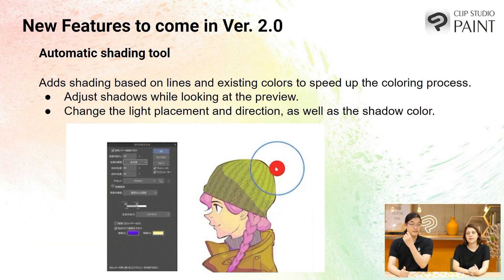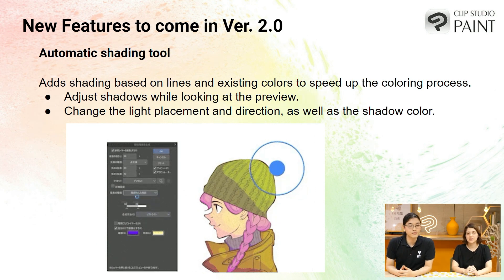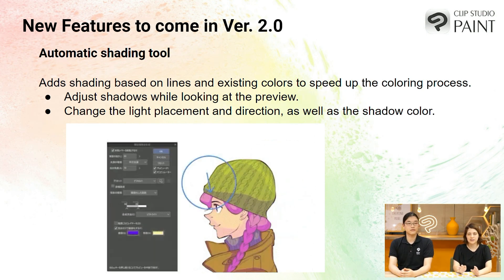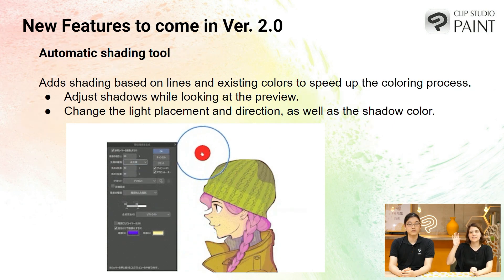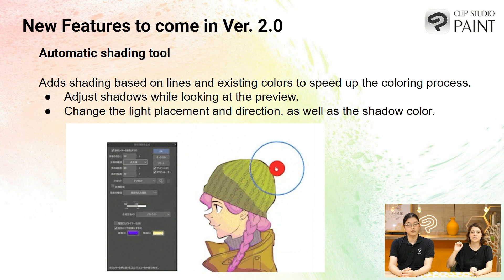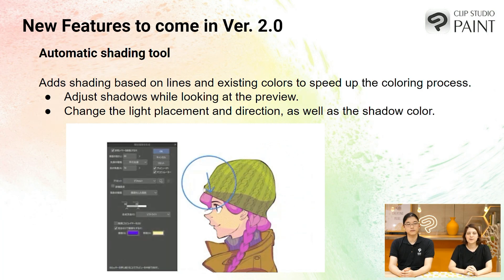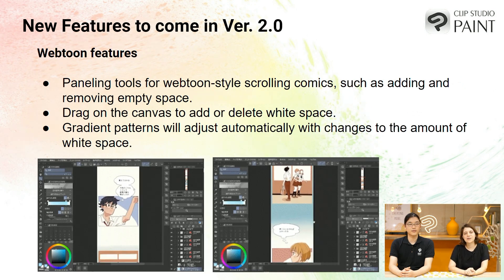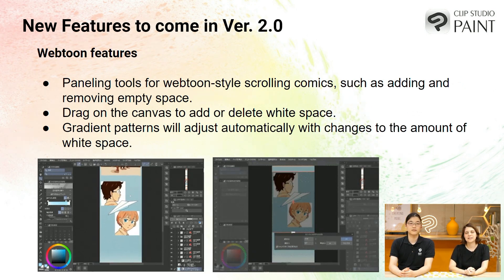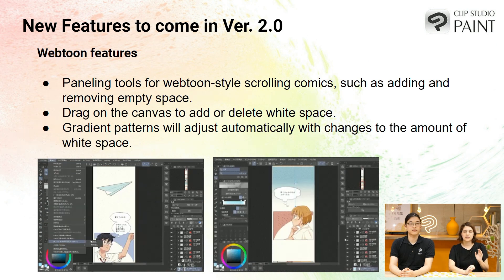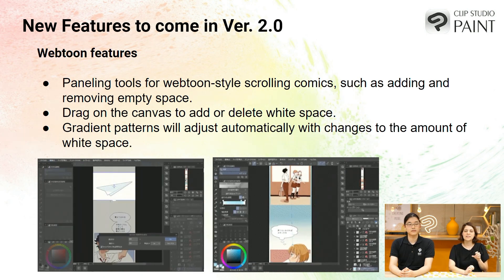We are also featuring an automatic shading tool called colorize to help you with shading. You can control a light orb to show where the light is coming from and it will generate shadows, as shown in this little video. We also have different webtoon features for scrolling comics where you can change the amount of white space and the gradient more easily to control the time flow.